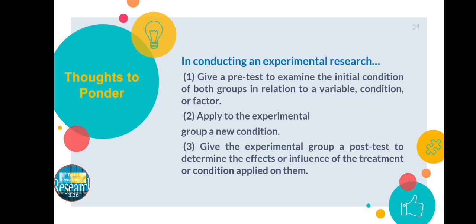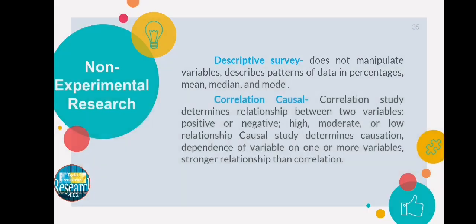It is very important to give a pre-test first, then the intervention, and then the post-test, so you can compare results from pre-test to post-test. If the result shows a significant effect, then the treatment is effective. If there is no significant effect, then the treatment may not be important. In non-experimental research, there are two types: one is descriptive survey and the other one is correlational causal.